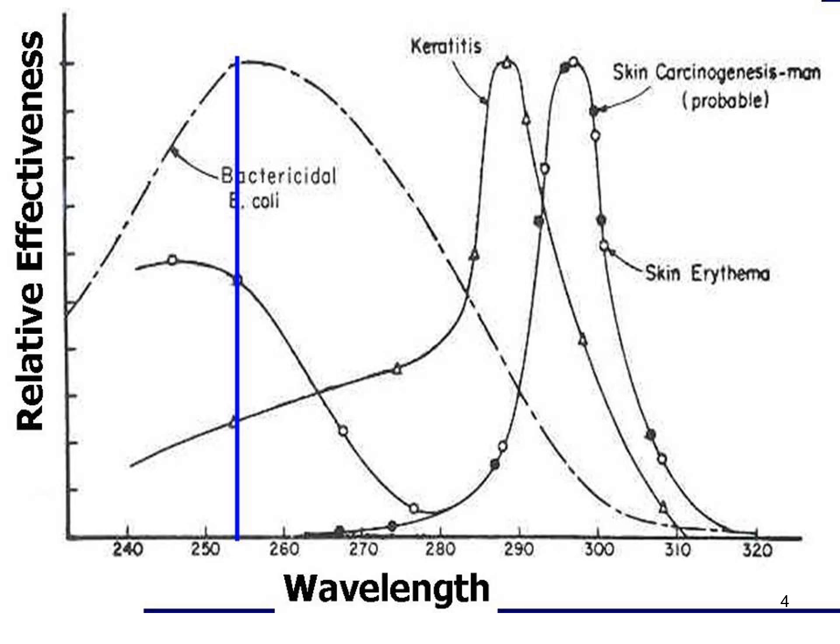The blue line marks 254 nanometers — the wavelength that has the most effective germicidal effect on E. coli, used as a surrogate test organism. In humans, UVGI may be absorbed by the outer surface of the skin and eyes. These forms of radiation can be hazardous to the cornea, causing keratitis, or the conjunctiva, causing conjunctivitis, as well as skin damage. Human adverse effects peak at higher wavelengths but can still occur with exposure at 254 to 255 nanometers.